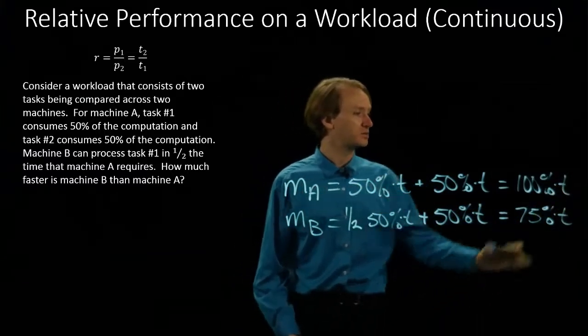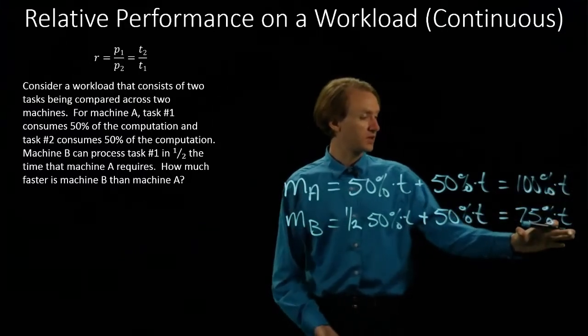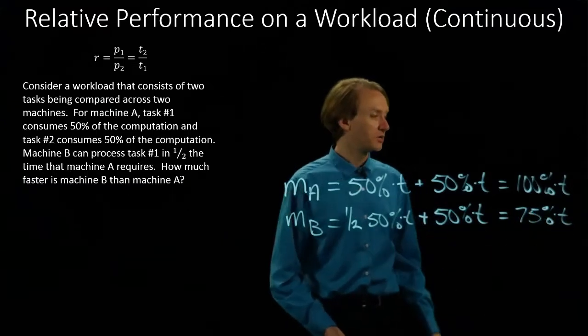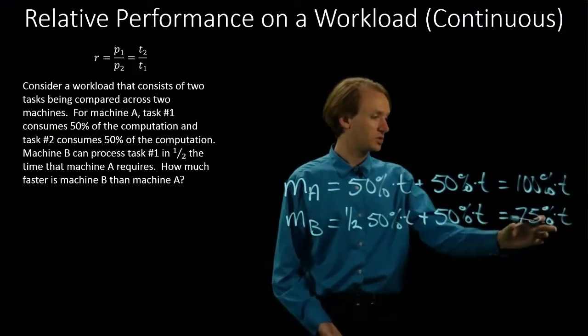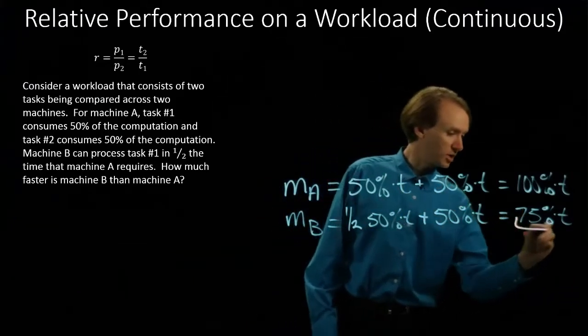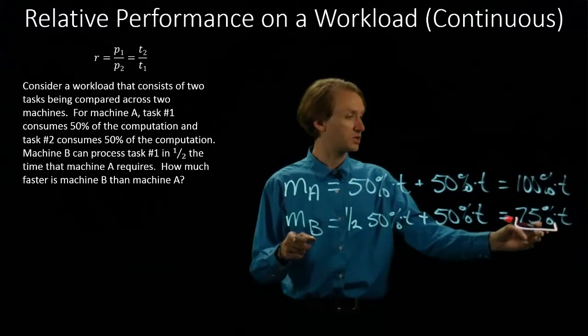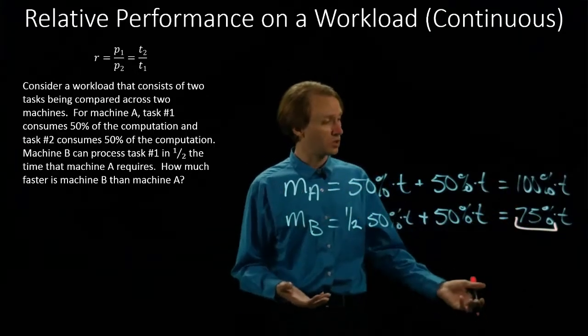So this is kind of nice, because this is 100%. The fact that this says 75% times time means that this is going to be my final solution. It should be obvious that machine B is going to take only three-fourths as much time as it took machine A to complete this same workload.